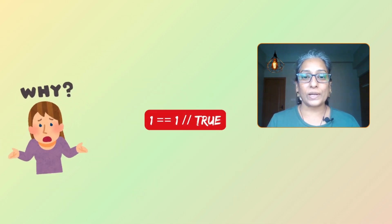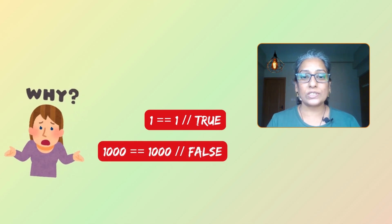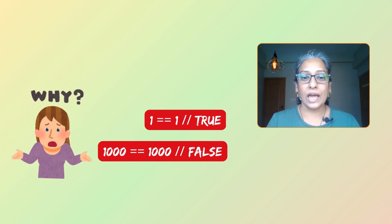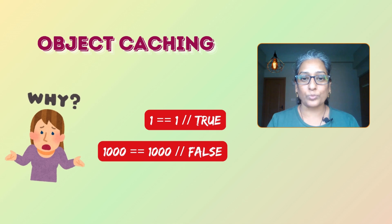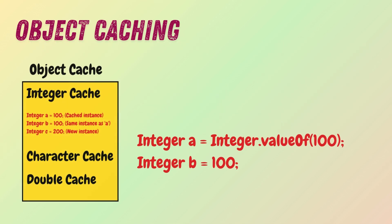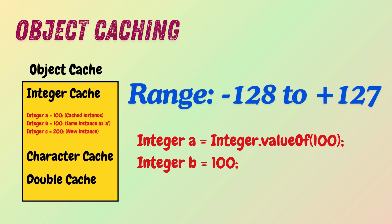The answer to why one equal to one evaluates to true but thousand equal to thousand evaluates to false involves an important concept in Java: object caching. Java optimizes memory and performance by caching frequently used objects, meaning that for certain value ranges the JVM reuses the same instance of the wrapper class. This is known as object caching.